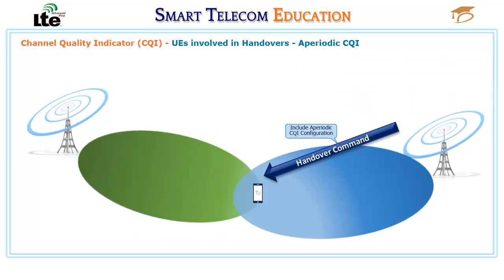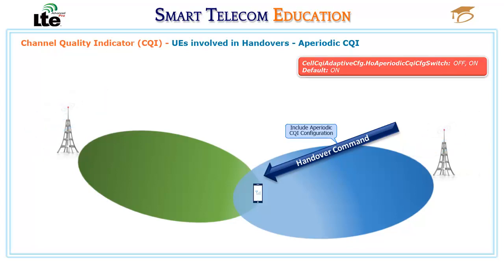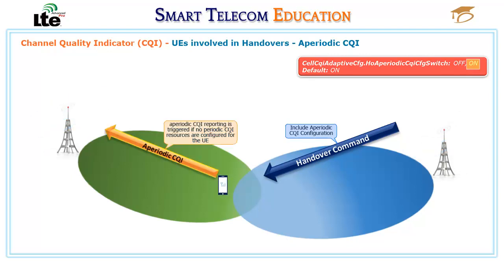Aperiodic CQI reporting can be configured in handover commands for UEs involved in handovers. This function is controlled by the handover aperiodic CQI configuration switch. If this switch is turned ON, aperiodic CQI reporting is configured in handover commands. When there are downlink services for UEs after handovers, aperiodic CQI reporting is triggered if no periodic CQI resources are configured for the UEs, thereby increasing downlink throughput. If this switch is turned OFF, aperiodic CQI reporting is not configured in handover commands; instead, it is configured only after handovers.